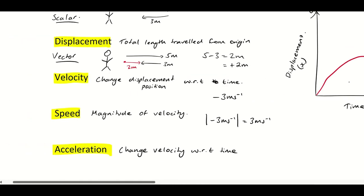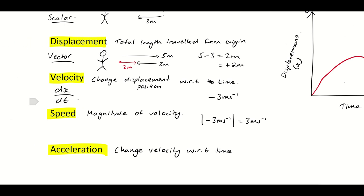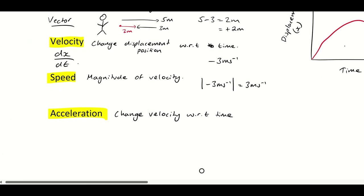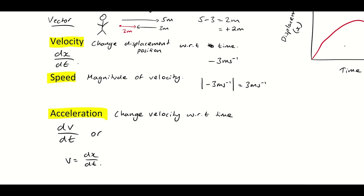We can say that the velocity is the change in displacement with respect to time — it's that derivative, and that's where our differentiation comes into play. The acceleration is the change in velocity with respect to time: dv over dt. Because v equals dx over dt, the change in v with respect to time can also be written as the double derivative of the displacement-time function.